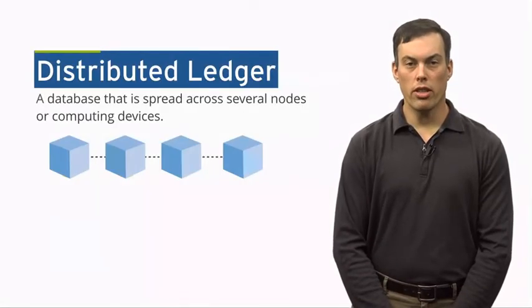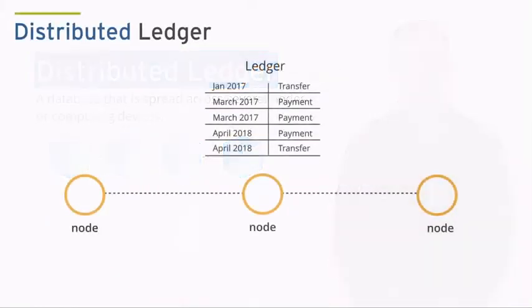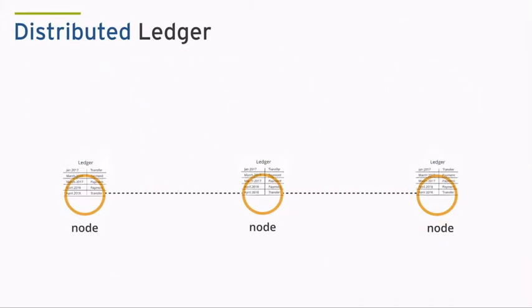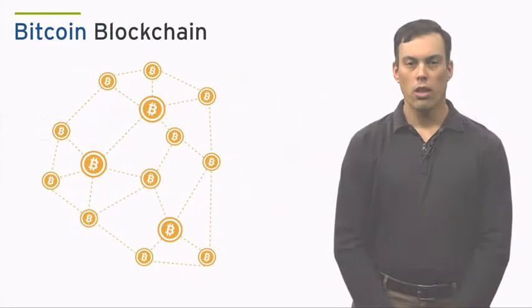A distributed ledger is a database that is spread across several nodes or computing devices. Each node replicates and saves an identical copy of the ledger.